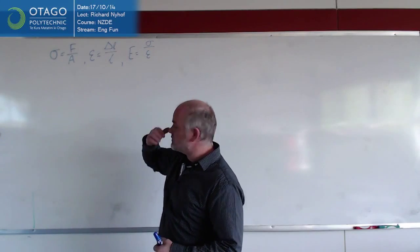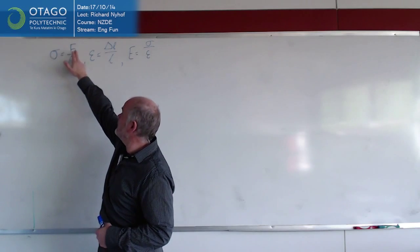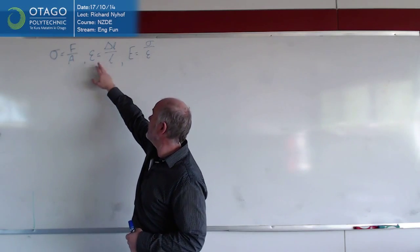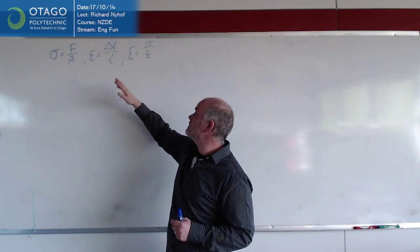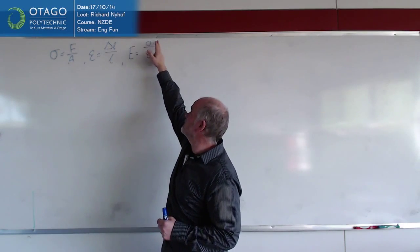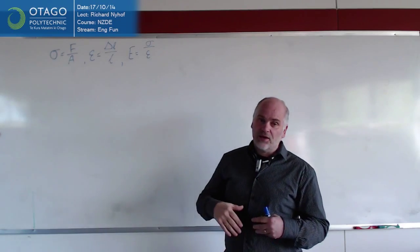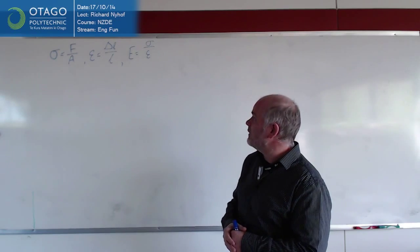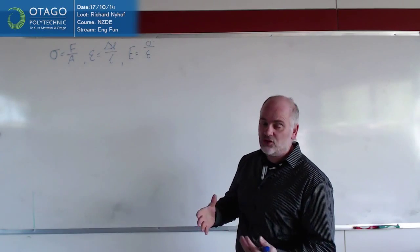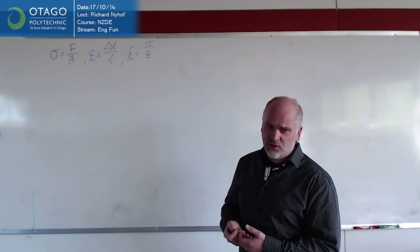These three formulas have enabled us to get a handle on what we're working with. Stress is force divided by area, strain is change in length divided by length, and then the one that relates those two things together, Young's modulus is stress over strain. With that we're able to calculate the type of area you require to carry a particular load or what sort of elongation you'll get in a particular setup.